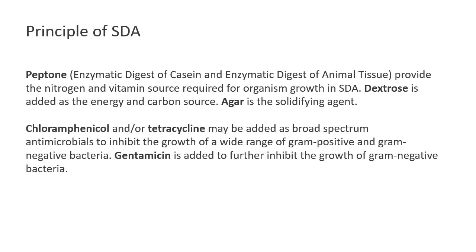The principle of Sabouraud Dextrose Agar is based on its ingredients. Peptone, which is an enzymatic digest of casein and animal tissue, provides nitrogen and a vitamin source for organism growth. Dextrose is a sugar that provides energy and serves as a carbon source. Agar is the solidifying agent.